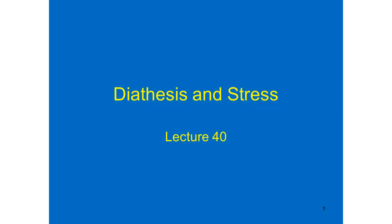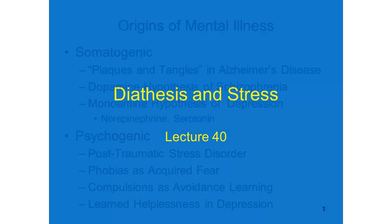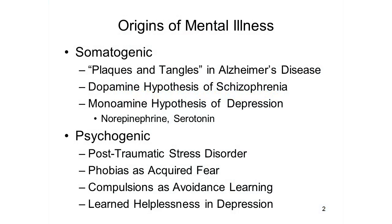Lecture 40: Diathesis and Stress. Where does mental illness come from? The history of psychiatry and clinical psychology can be characterized as a kind of cycle in which prevailing views alternate between somatogenic and psychogenic theories of mental illness.